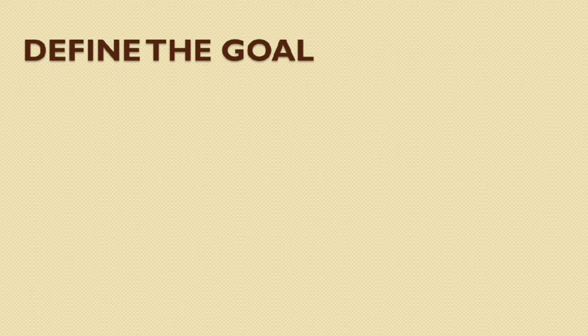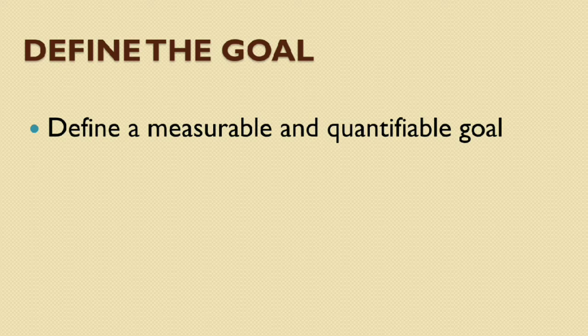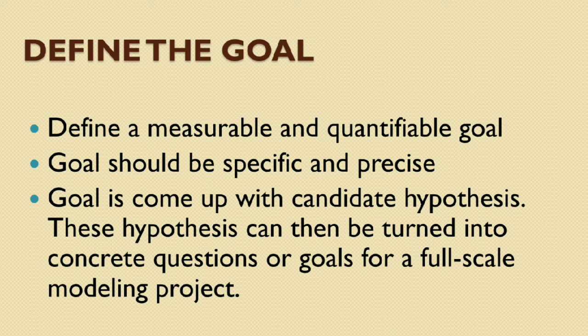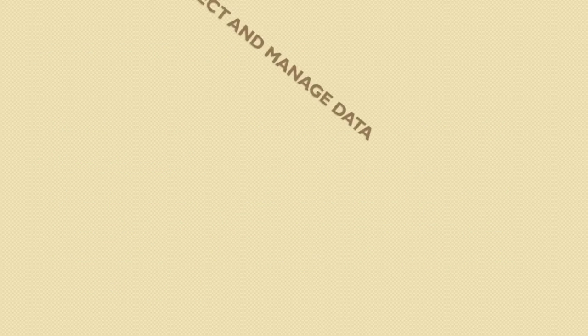The first stage and the first task in the data science project is define the model. Defining a measurable and quantifiable goal. And this goal should be specific and precise. In this stage, we are starting to define the precise goal of the project. And also it should be measurable. The goal is then come up with candidate hypothesis. These hypotheses can then be turned into concrete questions or goals for a full scale modeling project.